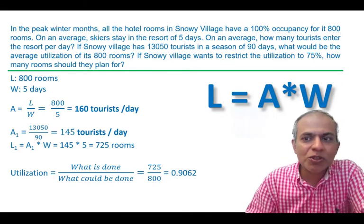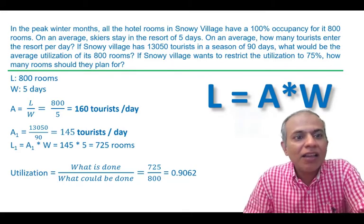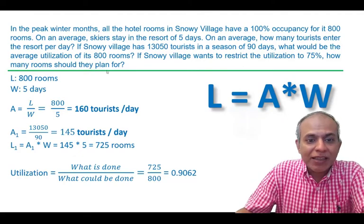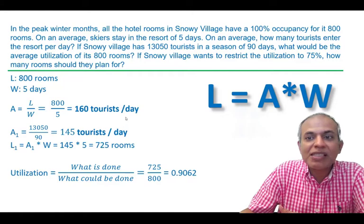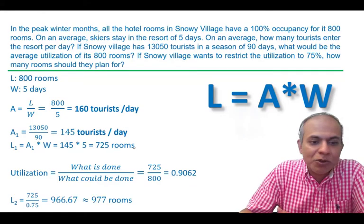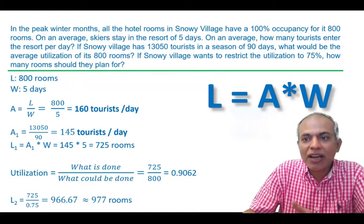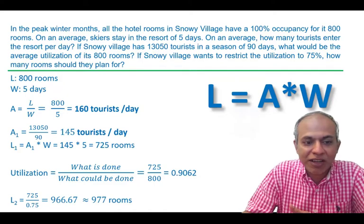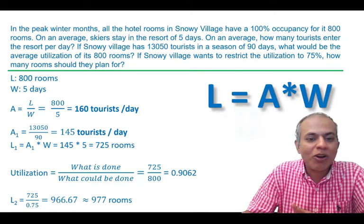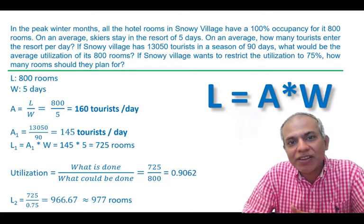Snowy Village wants to restrict utilization to 75% — I'll explain why shortly. So how many rooms should they plan for? The 725 rooms being required should represent only 75%, not 90%. Using straightforward mathematics, if 725 rooms equals 75% utilization, they should plan for 977 rooms, rounding up.